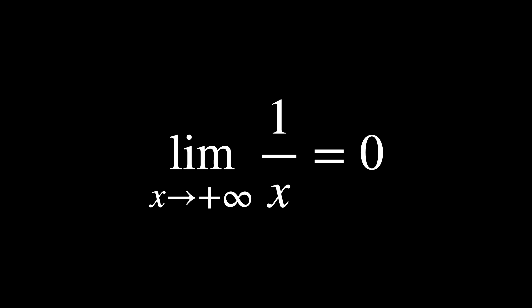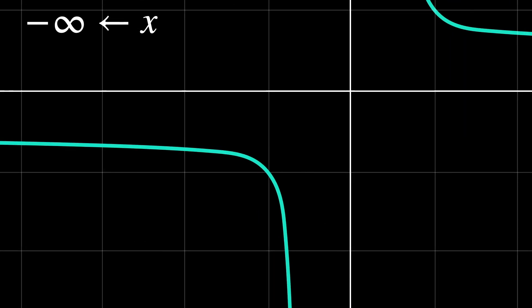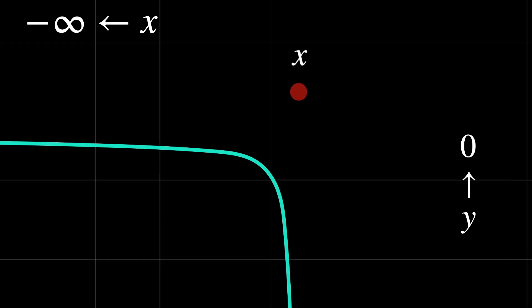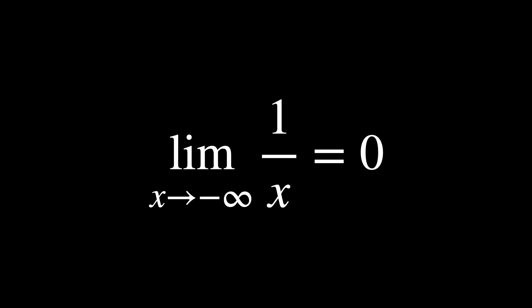Let's see what happens for x that tends to minus infinity. Pick this point in x. And we get this point in y. So the more we move to the left in x, the more we move up in y towards 0 again. The conclusion is that the limit with x that tends to minus infinity of 1 over x is 0.